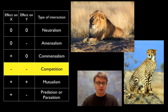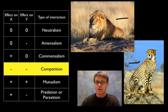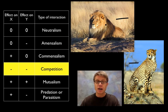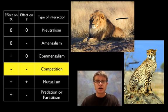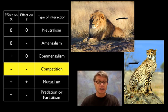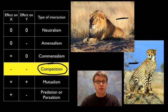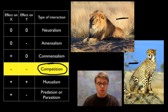Next is competition. An example is the lion and the cheetah — they both feed on similar prey. If the lion kills more prey, that's less for the cheetah, and vice versa. We call this competition. Lots of times if a lion moves into an area and finds cheetah cubs, they'll kill them because they're in direct competition for the same food source.